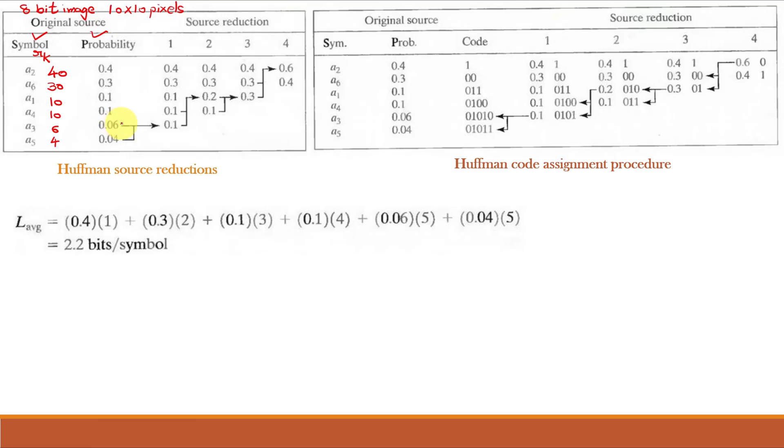Now start with the last two values of probabilities and add them. So, it is 0.06 plus 0.04 that will give you 0.1. Now write this 0.1 in the next column over here. The other values we will write as it is 0.4, 0.3, 0.1, 0.1 and these two will give us 0.1. But every time we do this, we have to maintain the next column also in the sorted manner in the descending order. So, 0.1 is already coming below all these values. So, we will write here itself.